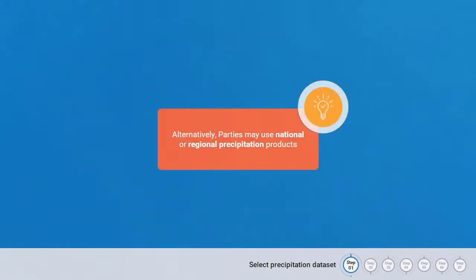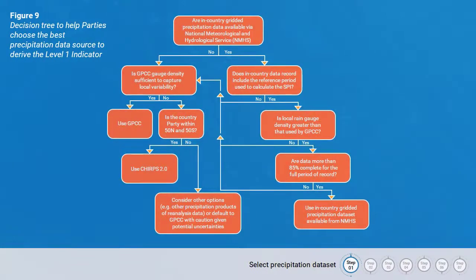Alternatively, parties may use national or regional precipitation products, especially if they have a higher spatial resolution and/or a longer period of record compared to the default data. A decision tree may help parties choose the best precipitation data source to derive indicator SO3.1. This decision tree can be found in the Good Practice Guidance for National Reporting on Strategic Objective 3.